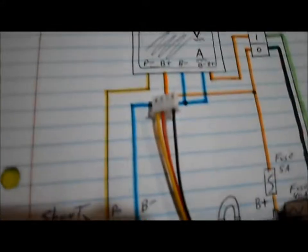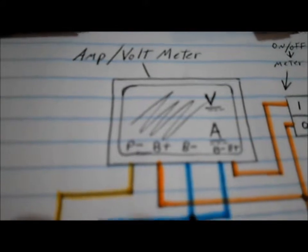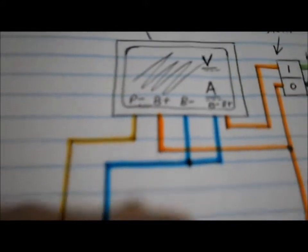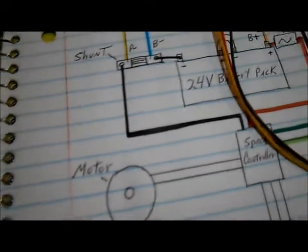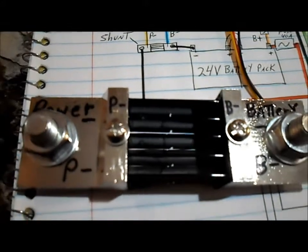So start off with our sensor wires. You have P minus, B plus and B minus. We'll go down here to our shunt.